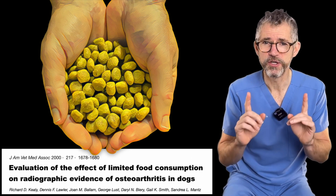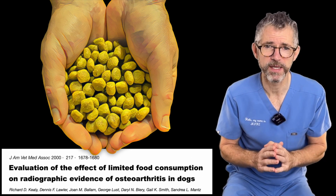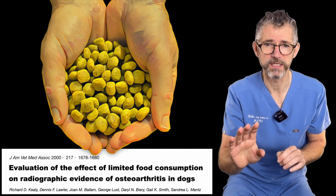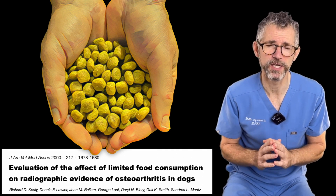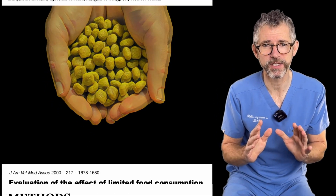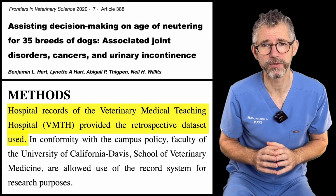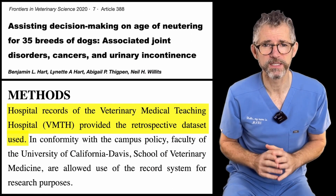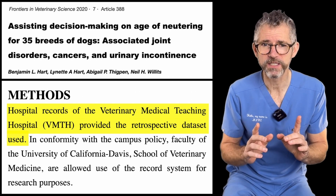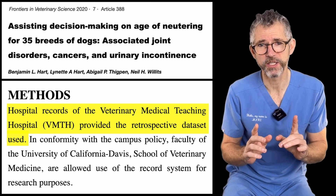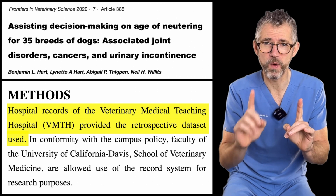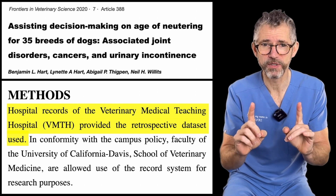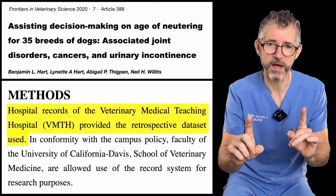There are no experimental studies comparing neutering to joint disease. All available research used data extracted from prior medical records. This is called observational research. Observational studies can show that X is related to Y, but they cannot prove that X causes Y.